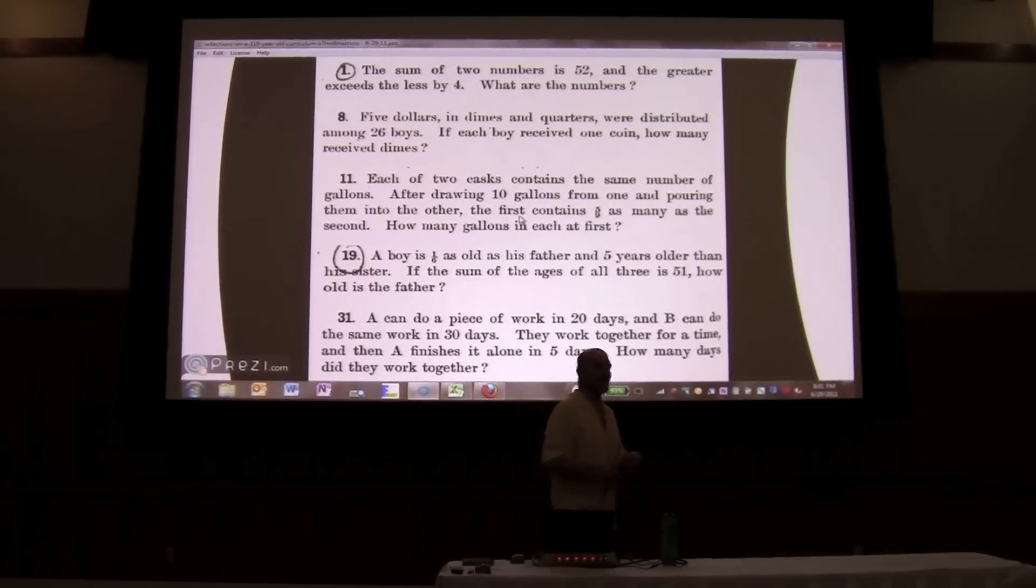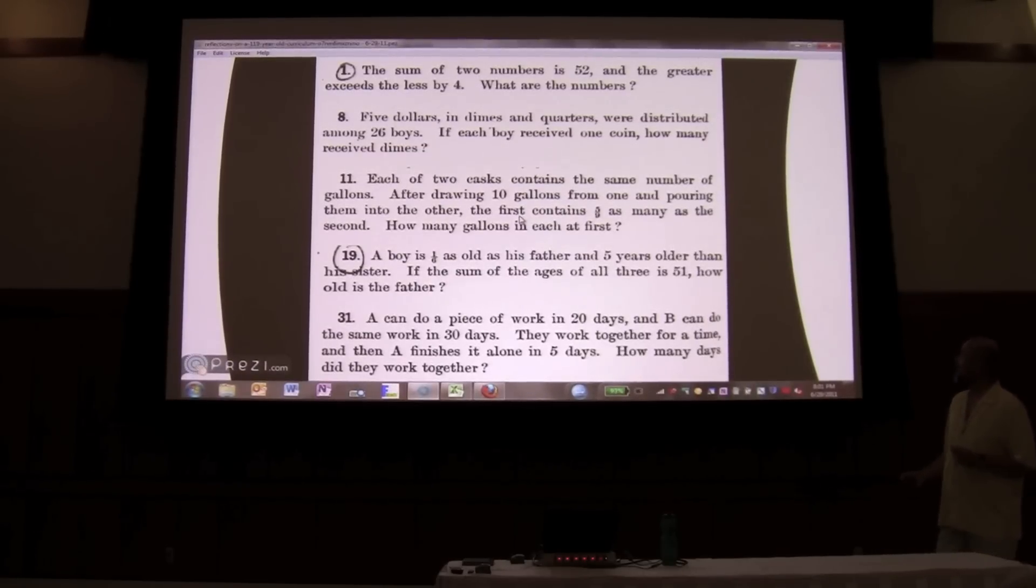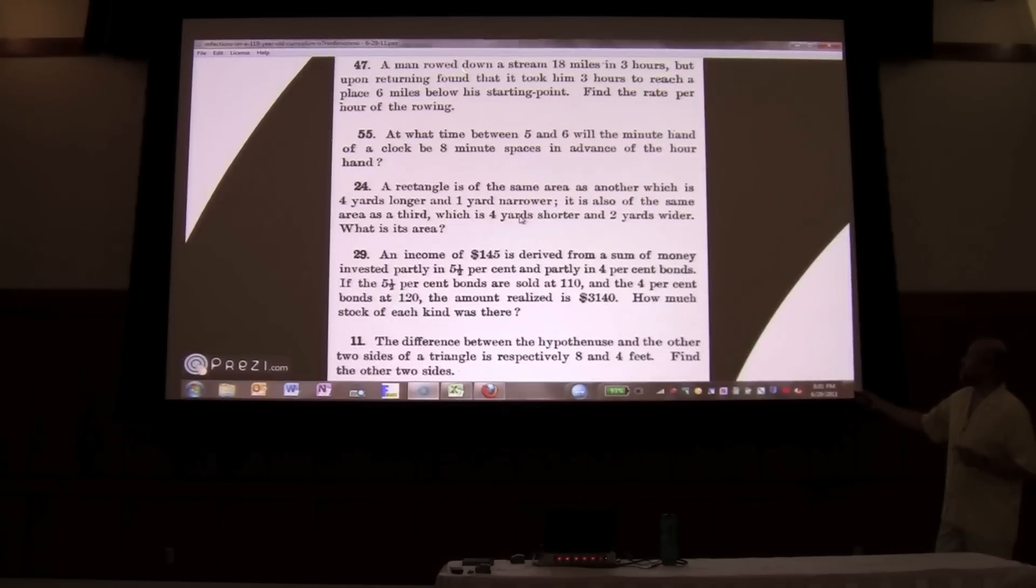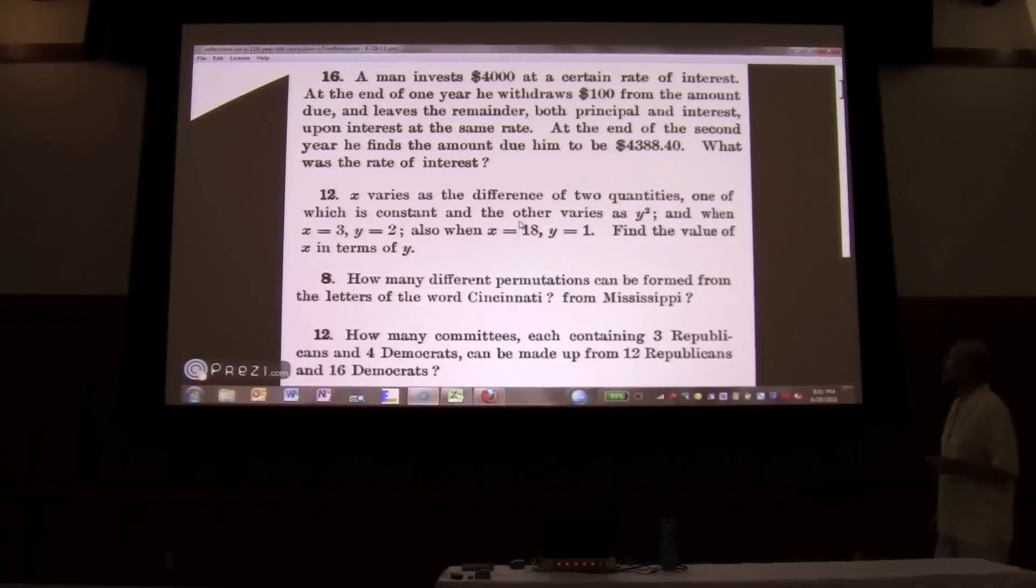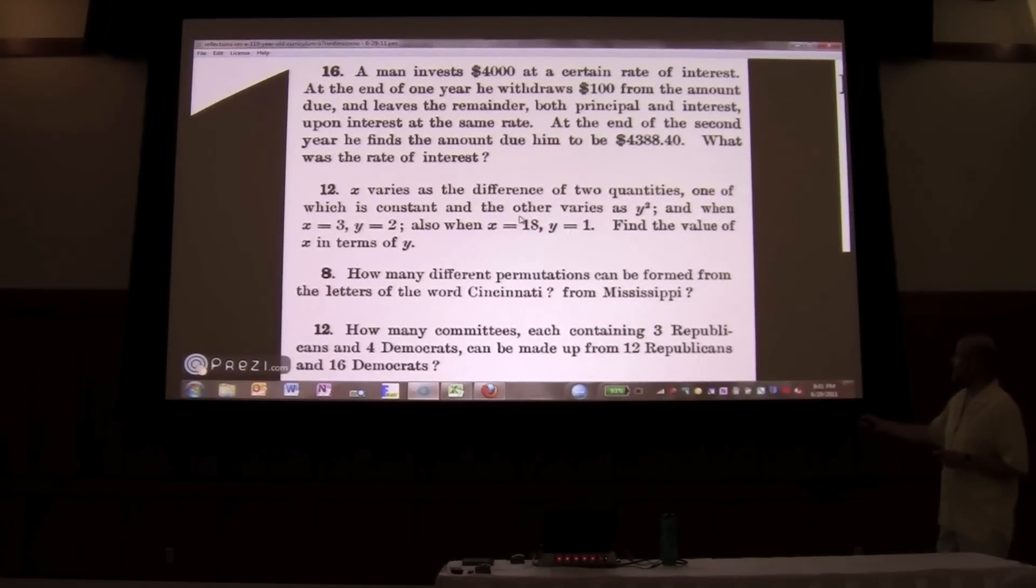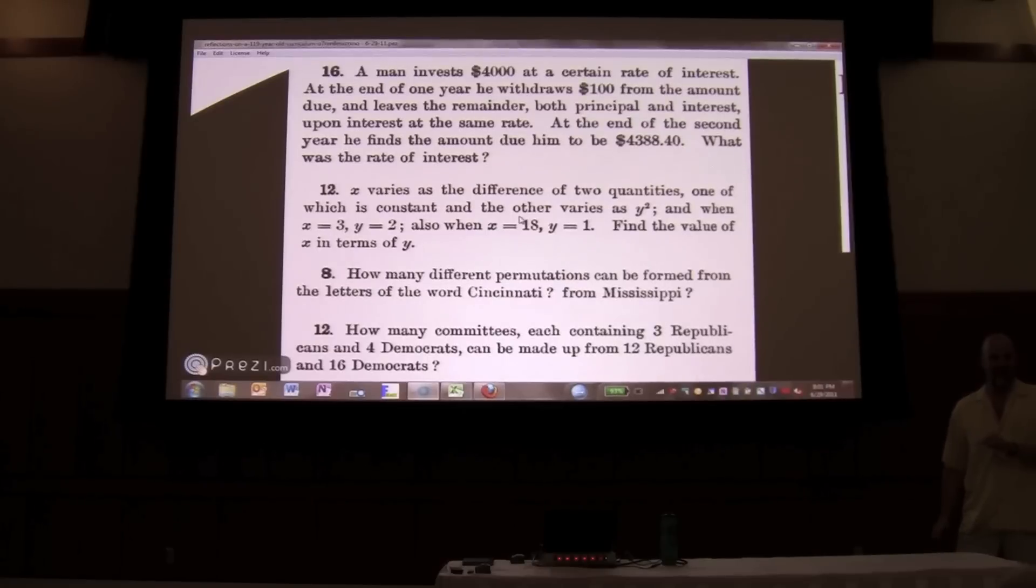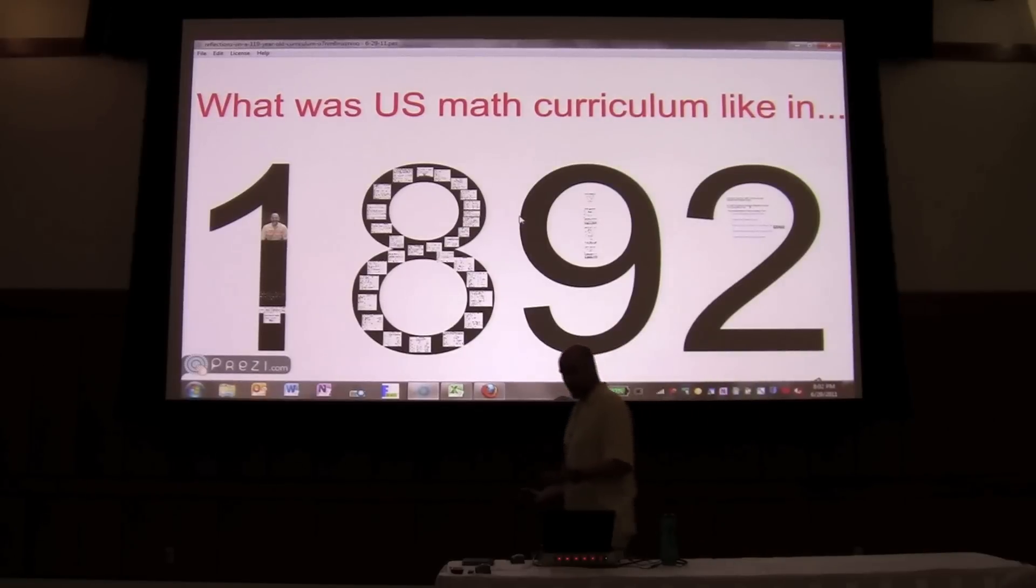The word problems are spread throughout the textbooks, but I've gathered them together on the following three screens. They look awfully familiar to me. Upstream, downstream. These two involve geometry. There are lots of problems involving money regularly in those textbooks. This is joint variation here. How many different permutations can be formed from the letters of Mississippi? That's currently in the Earl Swakowski pre-calculus book. Currently. Democrats and Republicans. They didn't get along then. So that gives you a glimpse of what the curriculum was like in 1892.